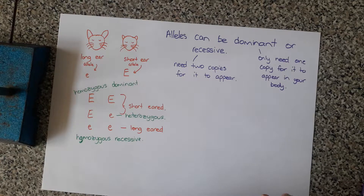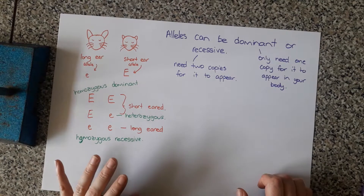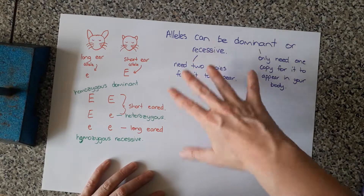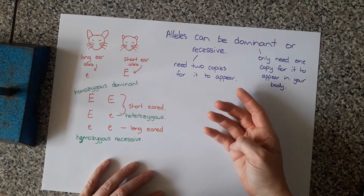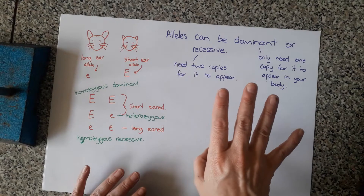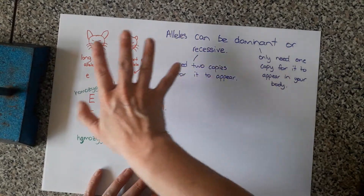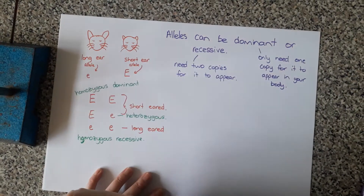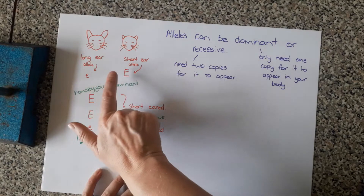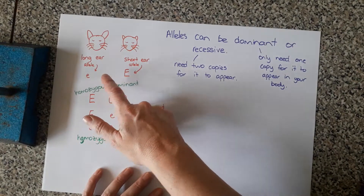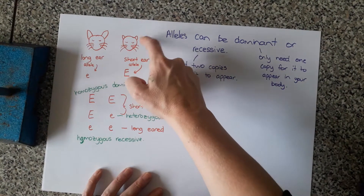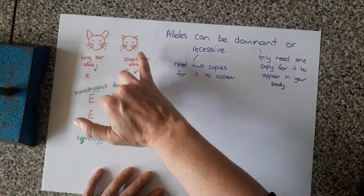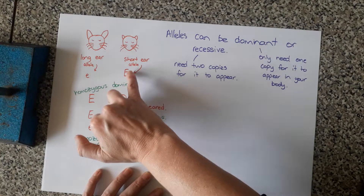We're going to come back to looking at alleles again. Alleles can be dominant or recessive — we're going to accept that and move on. We're going to use an example of these generic creatures, some of whom have short ears and some of whom have long ears. Looking at the population, we'll see that creatures with short ears appear more often, and if we do some study on them, we discover that the short ear allele is dominant.